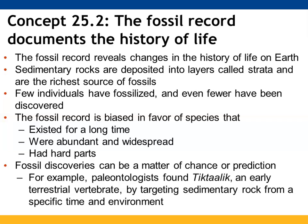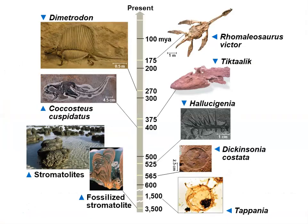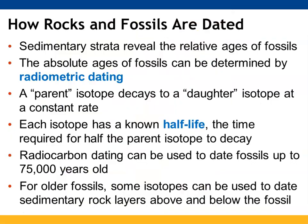Paleontologists found Tiktaalik, an early terrestrial vertebrate, by focusing on sedimentary rock that would have been present at a specific time and in a given environment. Here we can see some of the fossils that have been identified and their relative age. How do we date these rocks and fossils? This is something covered previously, and we're just going to review it in context.